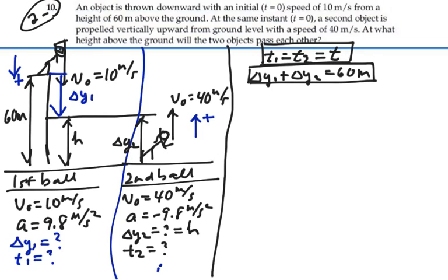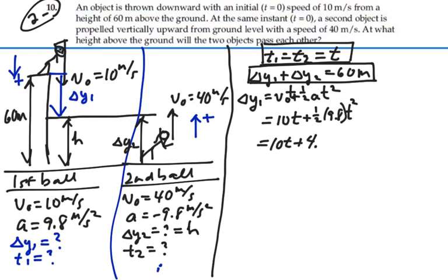Let's write our equations of motion for each ball. For the first ball, we have that our displacement, delta y1, is equal to initial velocity times time plus one-half acceleration times time squared. So this is going to equal 10 times t plus one-half times 9.8 times t squared. So this is equal to 10t plus 4.9 t squared. That is our delta y1.